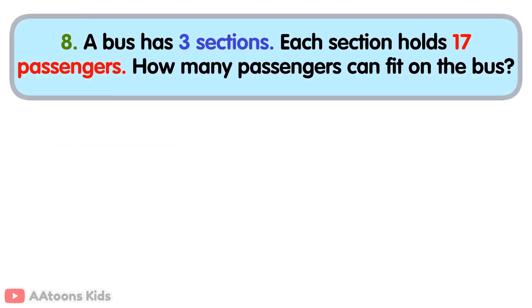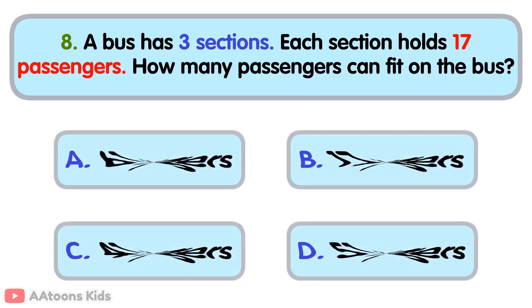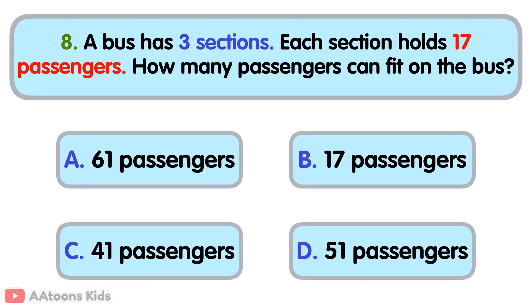A bus has three sections. Each section holds seventeen passengers. How many passengers can fit on the bus?